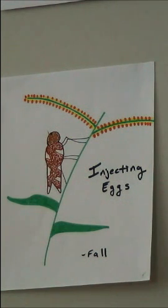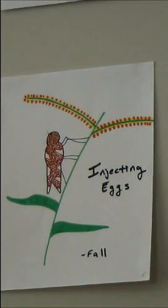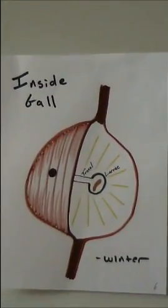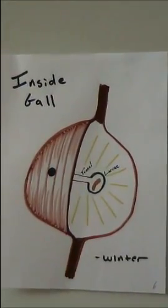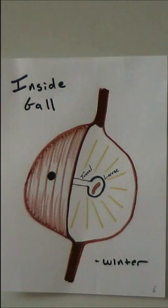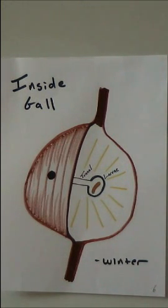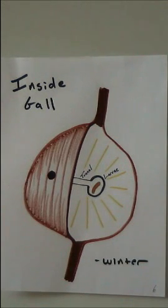The gall fly larvae will hatch in about ten days and begin eating the inside of the stem. Their saliva contains a chemical that causes the plant to grow abnormally around them and form the gall. When the gall is about the size of a golf ball, they'll stop eating and the gall will stop growing. The larvae will then make a tunnel to the outer edge of the gall and then return to the center as fall sets in.